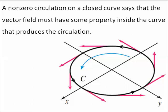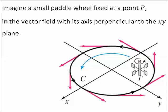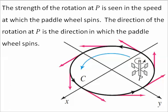You can think of this property as net rotation. Imagine a small paddle wheel fixed at a point P in the vector field with its axis perpendicular to the XY plane. The strength of the rotation at P is seen in the speed at which the paddle wheel spins.